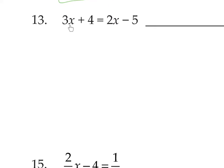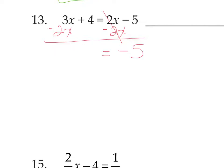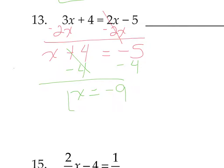On number 13, 3x plus 4 equals 2x minus 5. Both sides are simplified, but we have variables on both sides. The first step is getting the x's together. I'm going to subtract 2x — 2x minus 2x makes 0. On the left, 3x minus 2x makes 1x, so x plus 4 equals negative 5. Subtract 4: x equals negative 5 minus 4, which is negative 9.